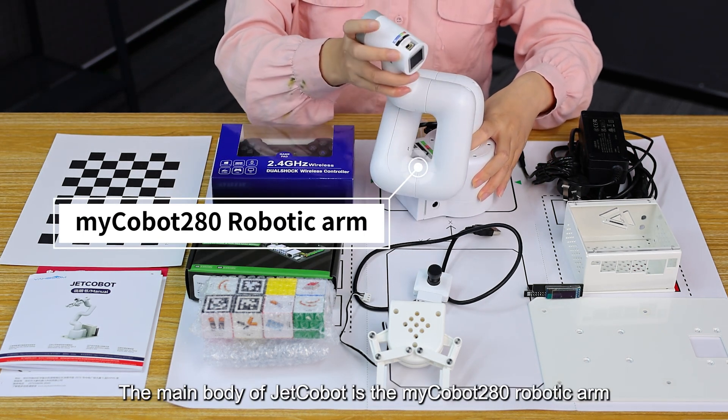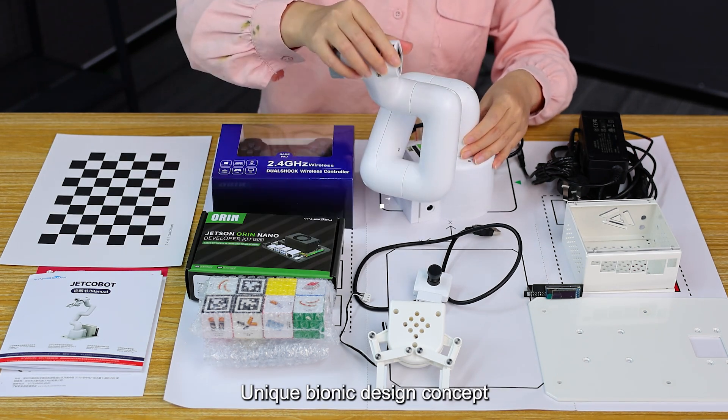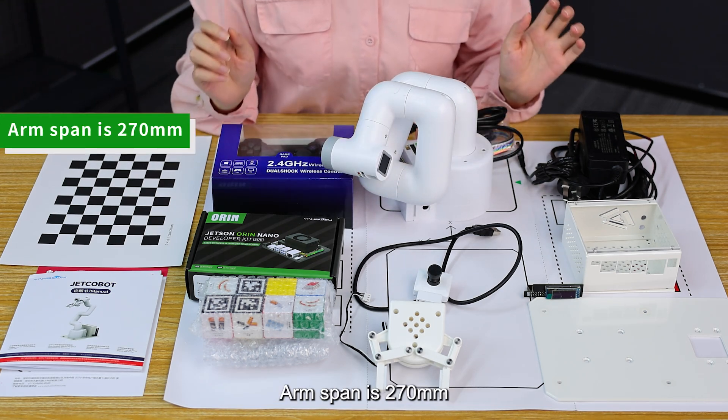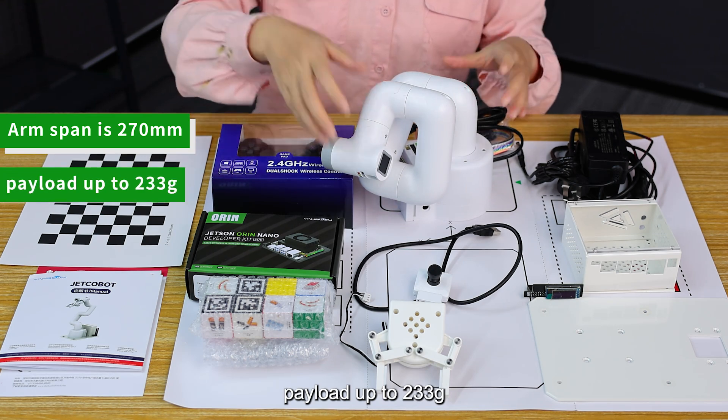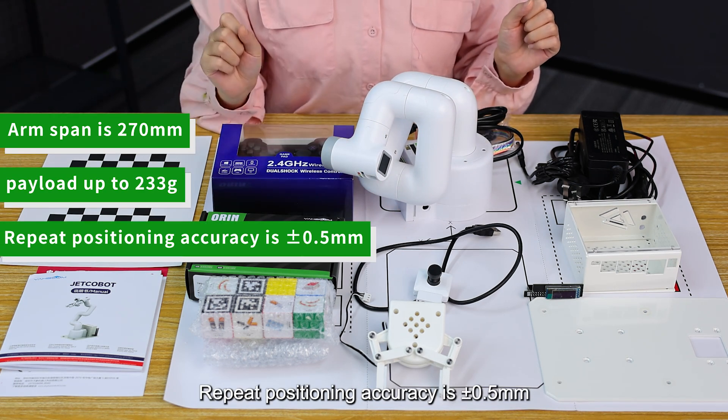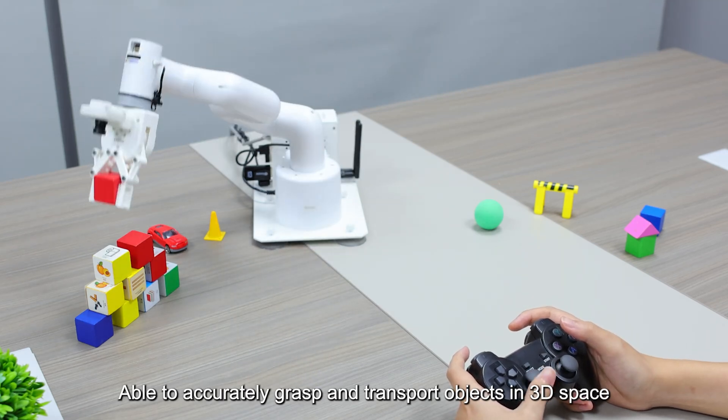The main body of JetCobot is the Mycobot 280 robotic arm with a unique bionic design concept and robot-like configuration. The arm span is 270 millimeters, payload up to 233 grams, and repeat positioning accuracy is 0.5 millimeters. It's able to accurately grasp and transport objects in 3D space.